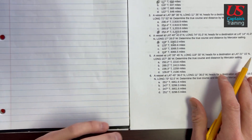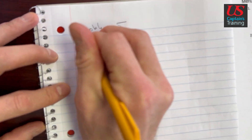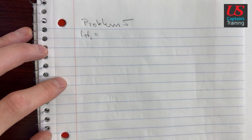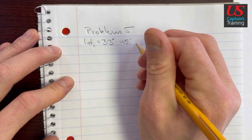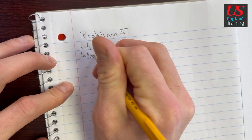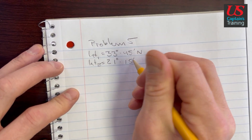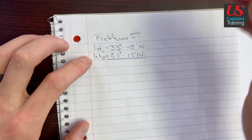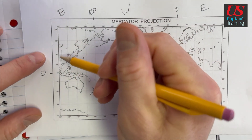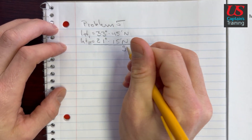First thing we need to do is solve for little l, and that's lat 1 minus lat 2. Lat 1 equals 33 degrees, 45 minutes north. Lat 2 is equal to 21 degrees, 15 minutes north. We went from 33 to 21 — that's south. If you were at 33 and you went down to 21, you're going south.